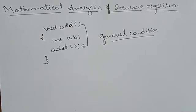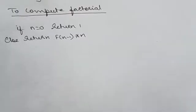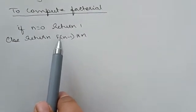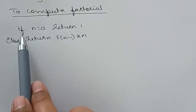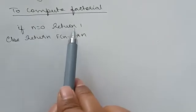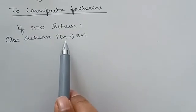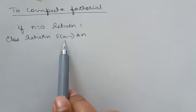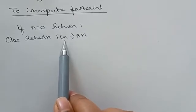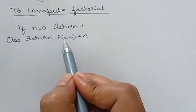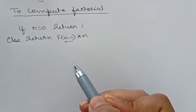This is the algorithm to compute the factorial of n numbers. As we know, 0 factorial equals 1, so if n equals 0, return 1. Otherwise, we call this function recursively: f(n-1) * n. I'll show you how this function works.